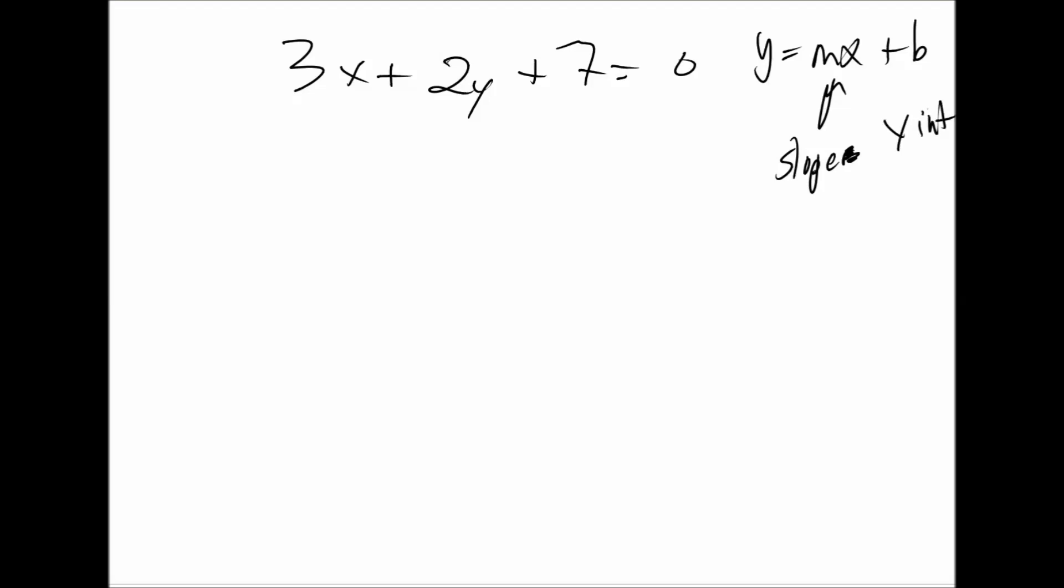So in order to do this, you need to set it up where y is equal to everything else. So we need to get this by itself. Let's make it easy on ourselves and just move that one to the other side. So subtract 2y. So we have 3x plus 7 equals negative 2y.